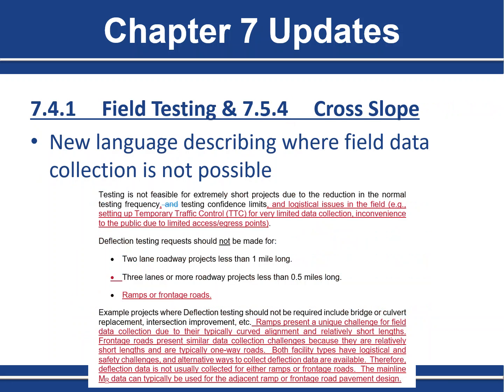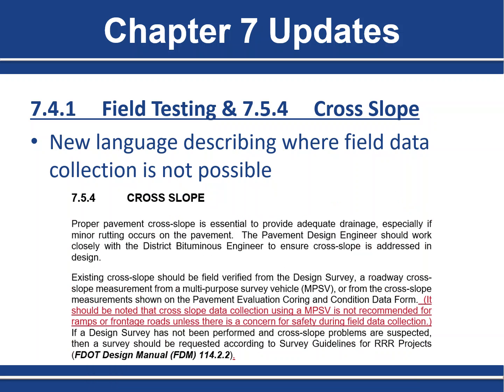Sections 7.4.1 and 7.5.4 were updated to address difficulties with field data collection in certain locations. Section 7.4.1 now states that deflection testing requests should not be made for ramps or frontage roads, as they are one-way and typically short, presenting logistical and safety challenges. Mainline resilient modulus data can typically be used for adjacent ramps or frontage roads. Similarly, Section 7.5.4 adds that multipurpose survey vehicles should not be used to obtain cross-slope information on ramps or frontage roads, though project-specific requests can be made with the State Materials Office if safety concerns arise.